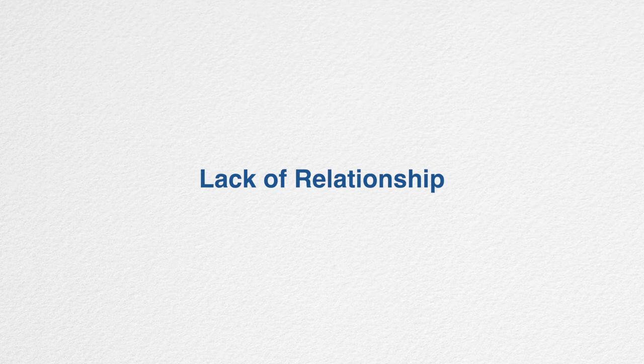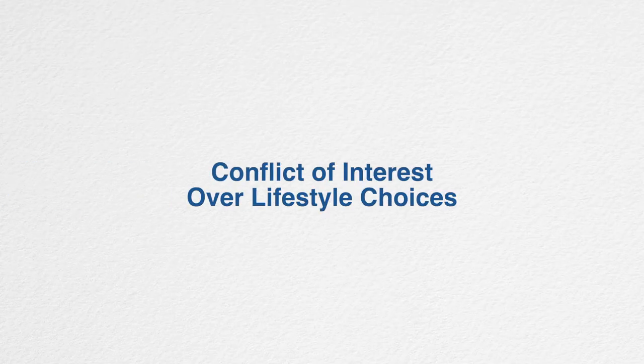Third, divorce. Upon divorce, it's common for ex-spouses to legally disinherit each other in their respective wills and trusts. Fourth, lack of relationship. If a child has no ongoing relationship with a parent, it's very common for that parent to disinherit the child in a will or trust. We need to be careful here — where a step-parent, child, or caregiver interferes with that relationship by isolating the parent, undue influence and fraud claims might exist. Fifth, conflict of interest over lifestyle choices. Sadly, it's all too common for parents to disinherit children simply because of a disagreement over the child's lifestyle choices, whether it's religion, whom they've chosen to marry, etc.